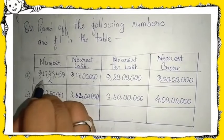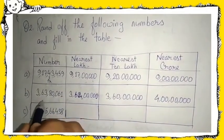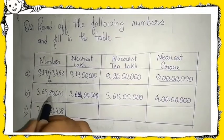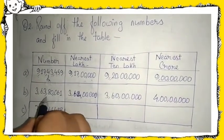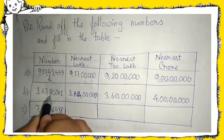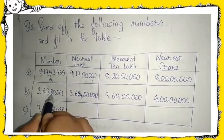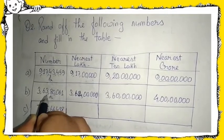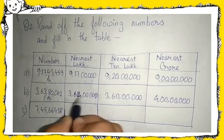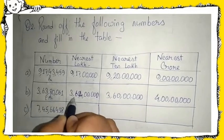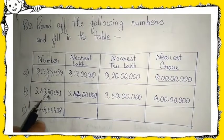Now part B: three crore sixty-three lakh eighty thousand sixty-one. Look at your ten thousands place — it is more than five, so you can add one to the lakh place. Three plus one will be four, so your answer for nearest lakh will be three crore sixty-four lakh.